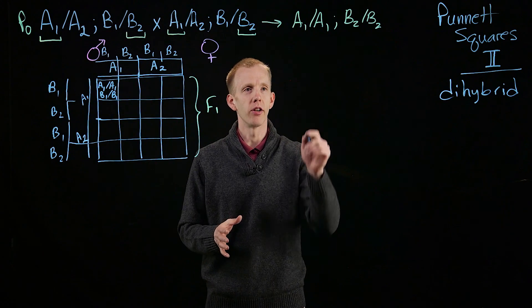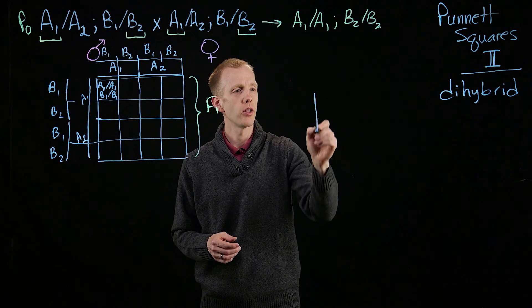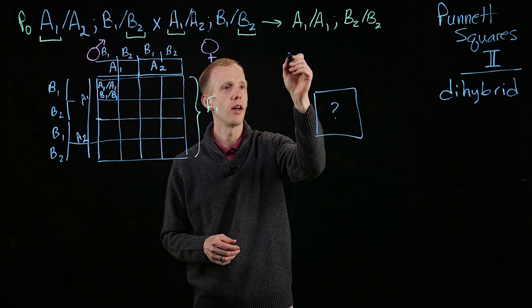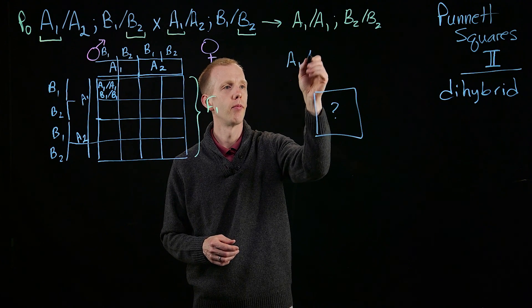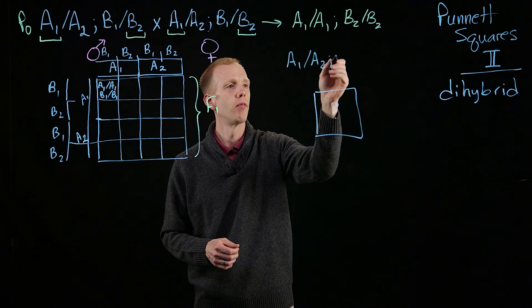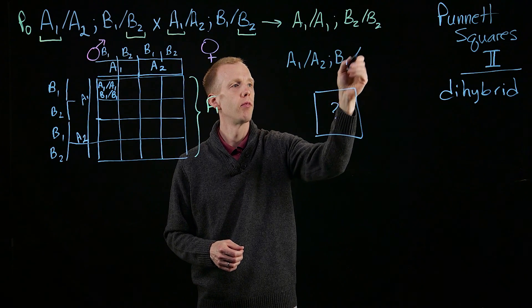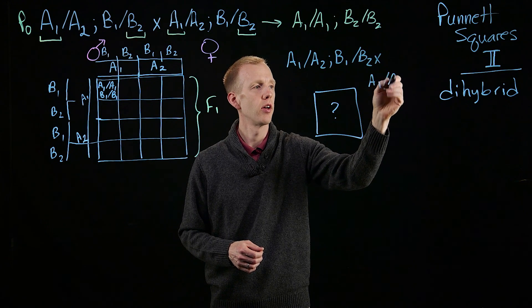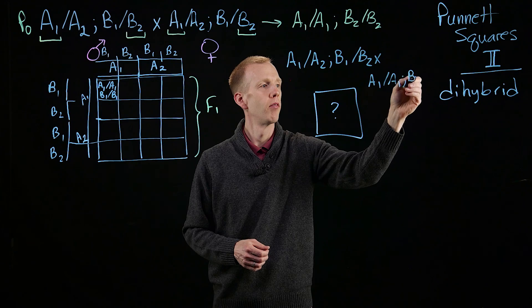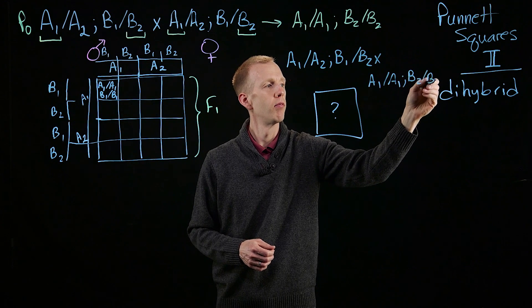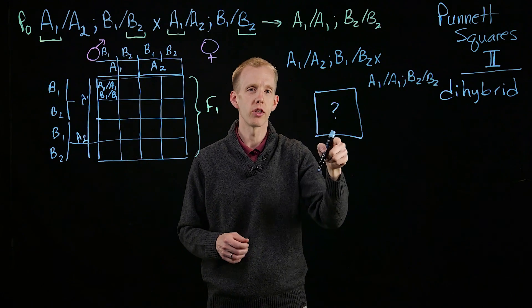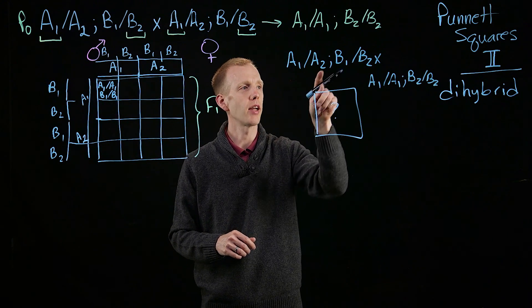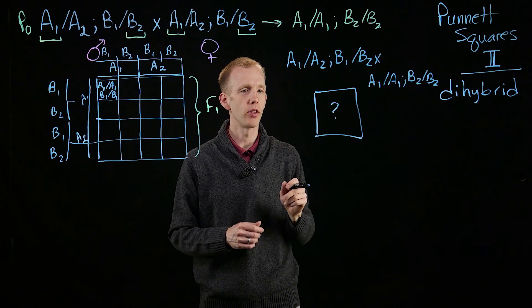Another type of Punnett square I'd like you to fill out is, what does the Punnett square look like when you have the P0 cross between a dihybrid, and a parent that's homozygous at both loci. So, come up with what is the structure? How many cells, what shape, what structure, will it take to predict the offspring genotypes from this cross of individuals?